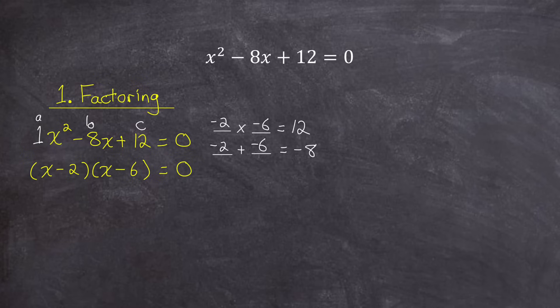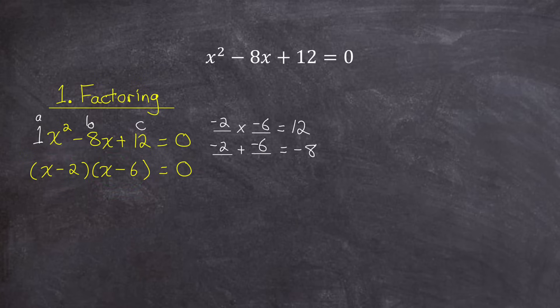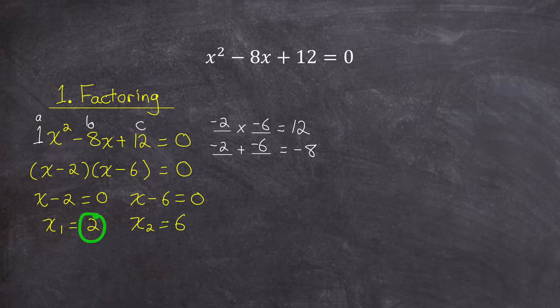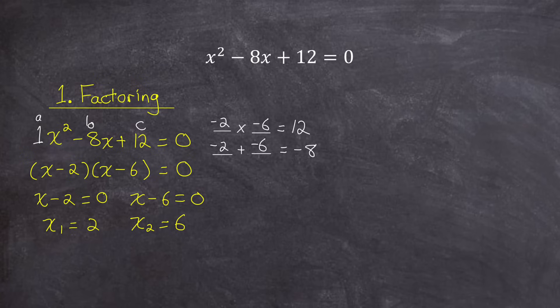Now that this is in factored form, the product of these two factors would be zero if either of the two factors were zero. So I'll set each of those factors to zero and solve, getting the answers of 2 and 6. Substituting in either 2 or 6 for x in the original equation would make the left side equal the right side, so those are the correct answers. This is the most efficient and probably the most common way of solving a quadratic that is factorable. But let's explore nine other ways to solve this quadratic equation as well.